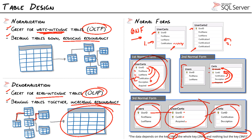The result is a highly normalized structure with no data redundancy. This will remove any update, insert, or delete anomalies and make it easier to modify the schema down the road. We have nice small focused tables covering all our use cases: users, certifications, and the actions that users can perform on certifications — all in their own separate entities.